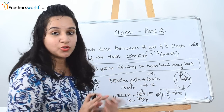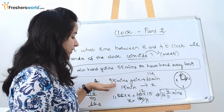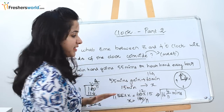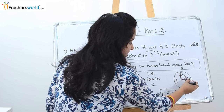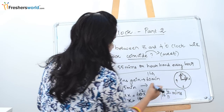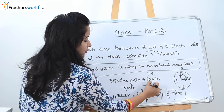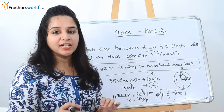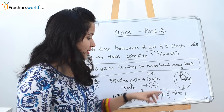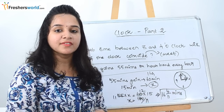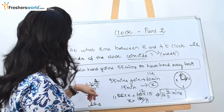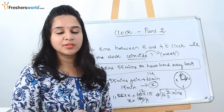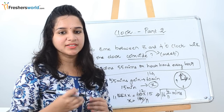So how do we solve the problem? First, we know the minute hand gains 55 minutes for every 60 minutes. Then we determine how many minutes the minute hand needs to gain for the hands to meet — which is 15 minutes between 3 and 4. We find the unknown variable x, and if the solution is a fraction we express it as 16 and 4/11. If asked for a decimal, we solve further. Let's solve another problem to better understand this concept.